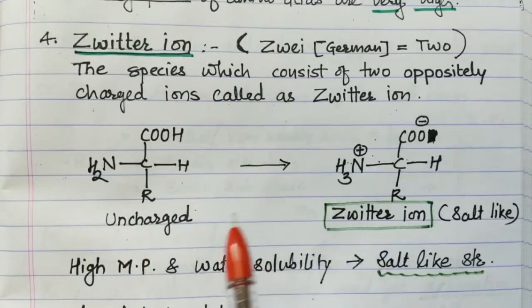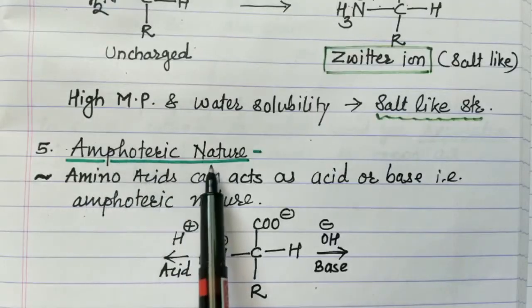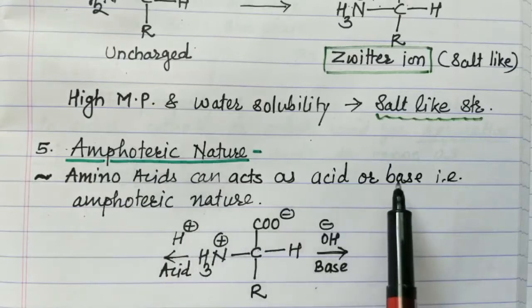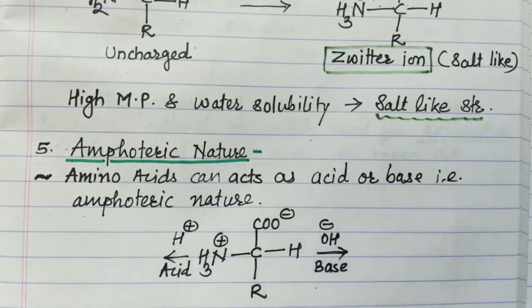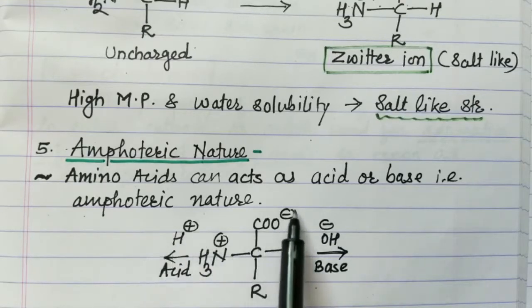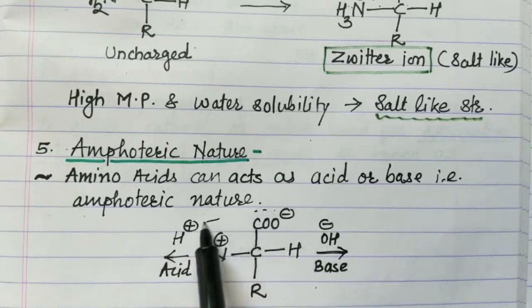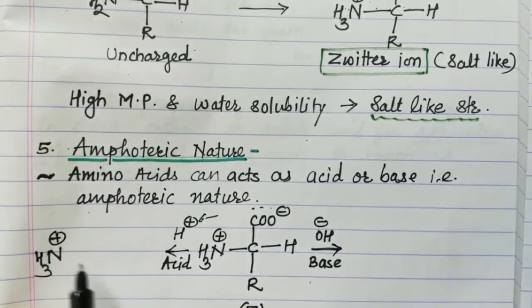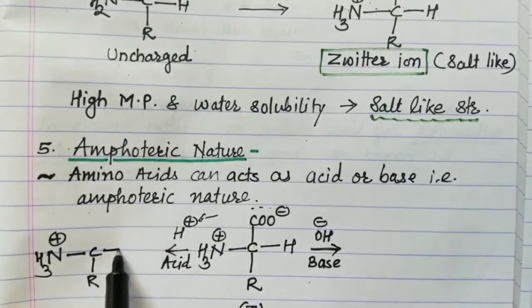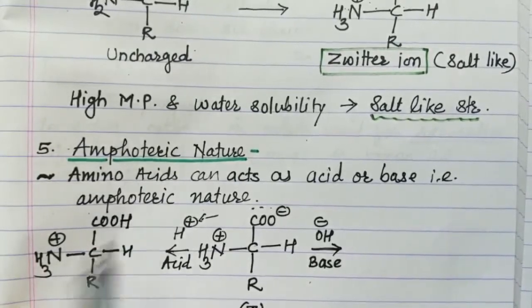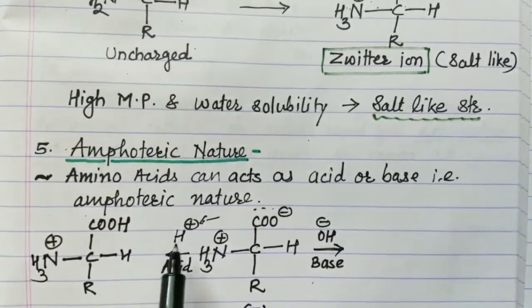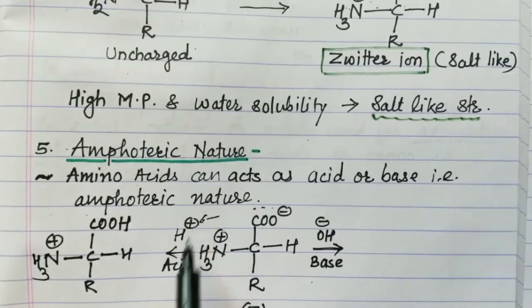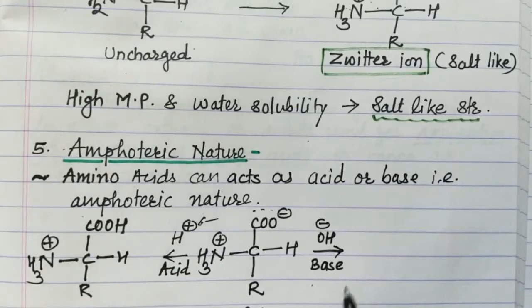The next property is the amphoteric nature of amino acids — they can act as either acid or base, showing both acidic and basic behavior. Taking the zwitterionic form of amino acid: in acidic medium, the negatively charged carboxylate ion accepts a proton, forming the protonated species. The species acts as a base because it is accepting the proton.